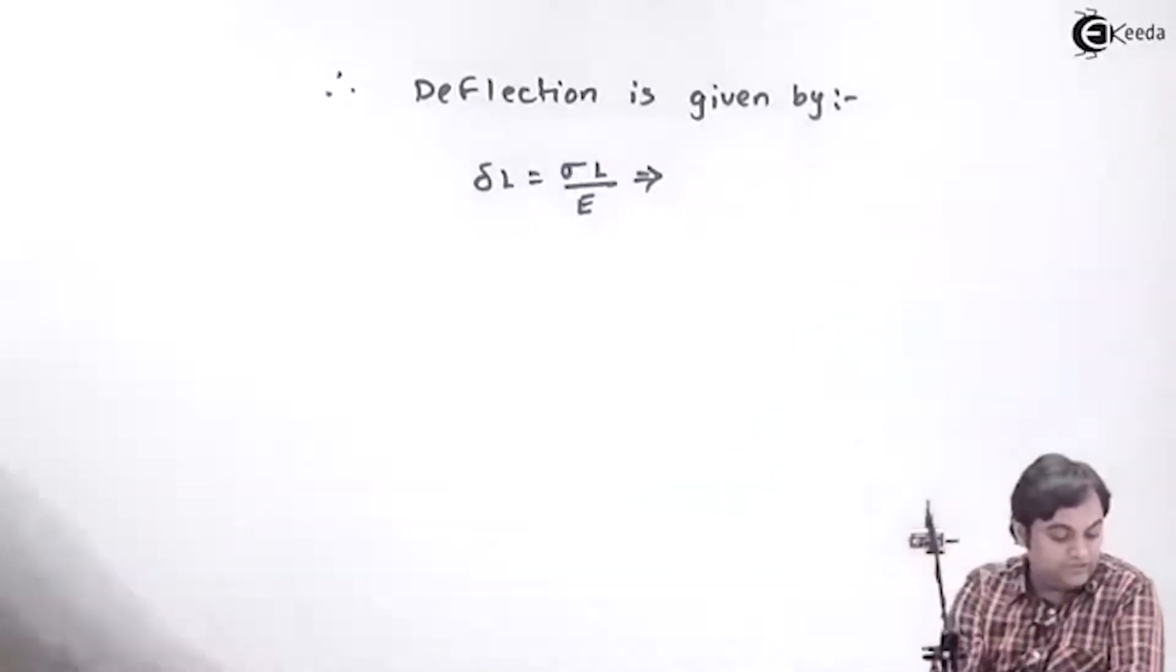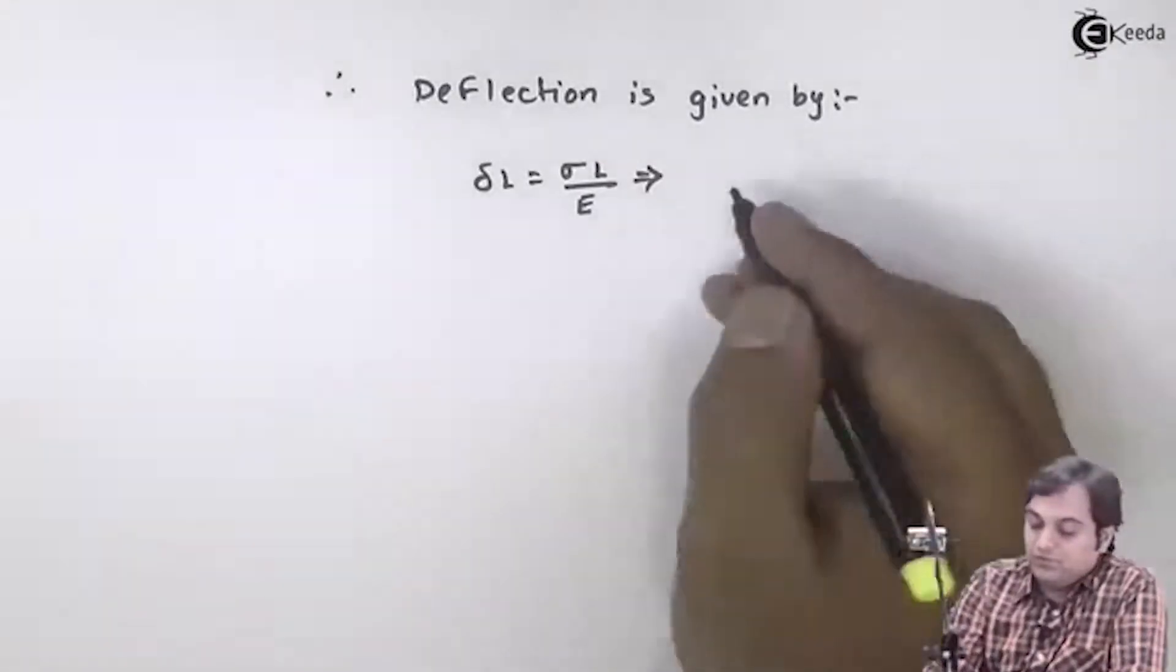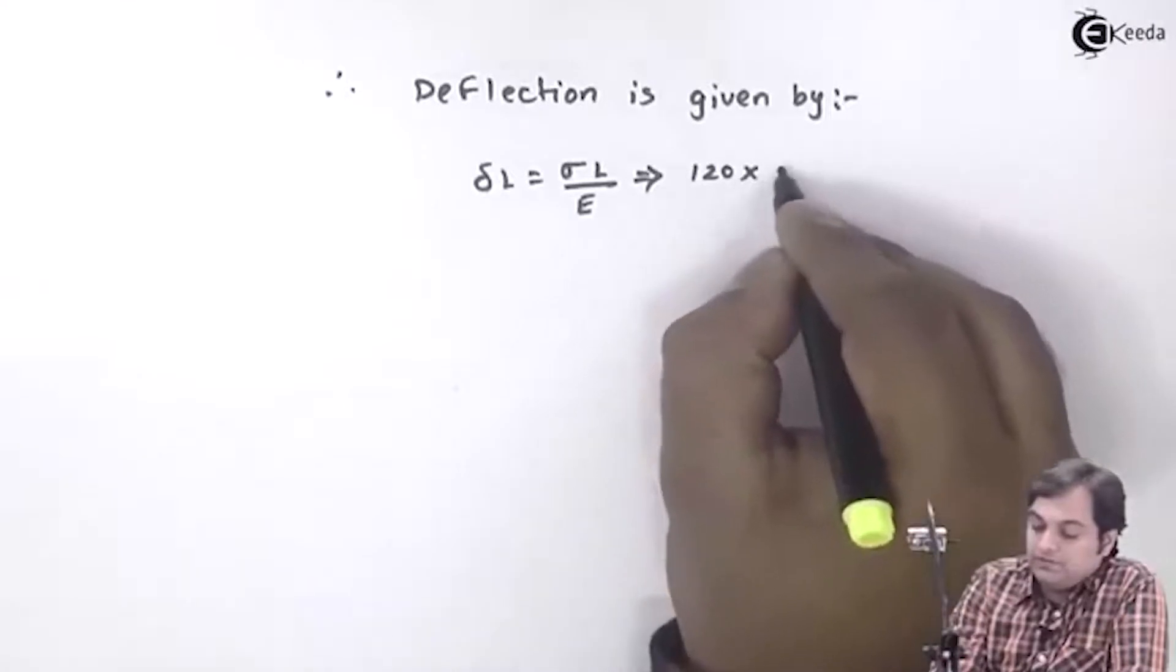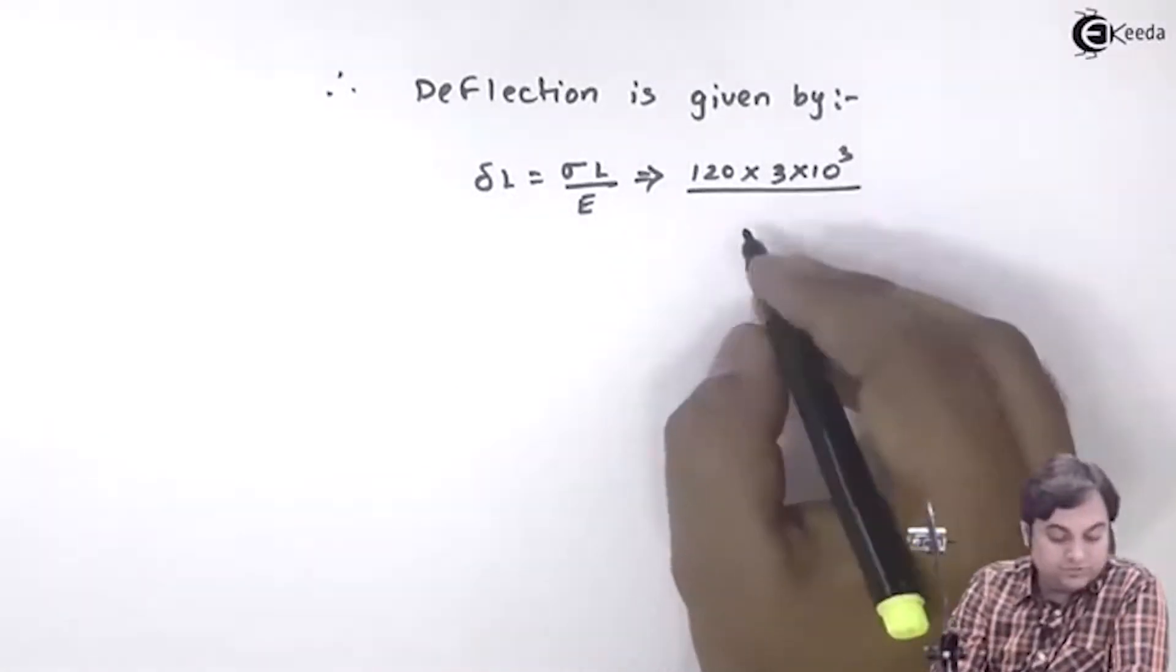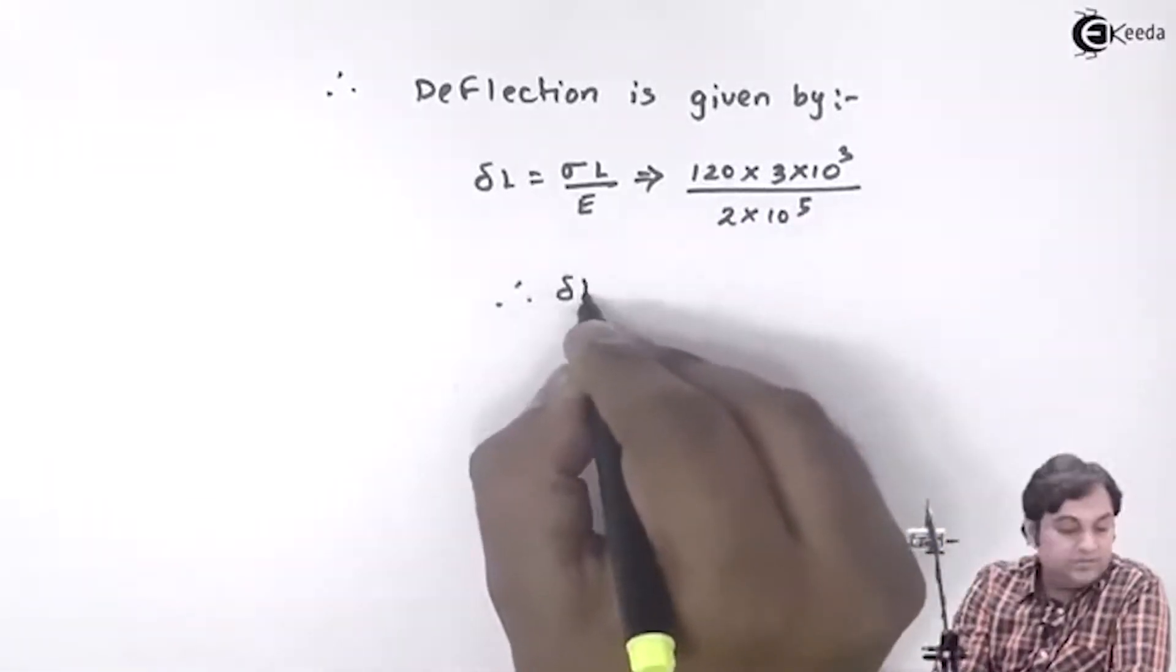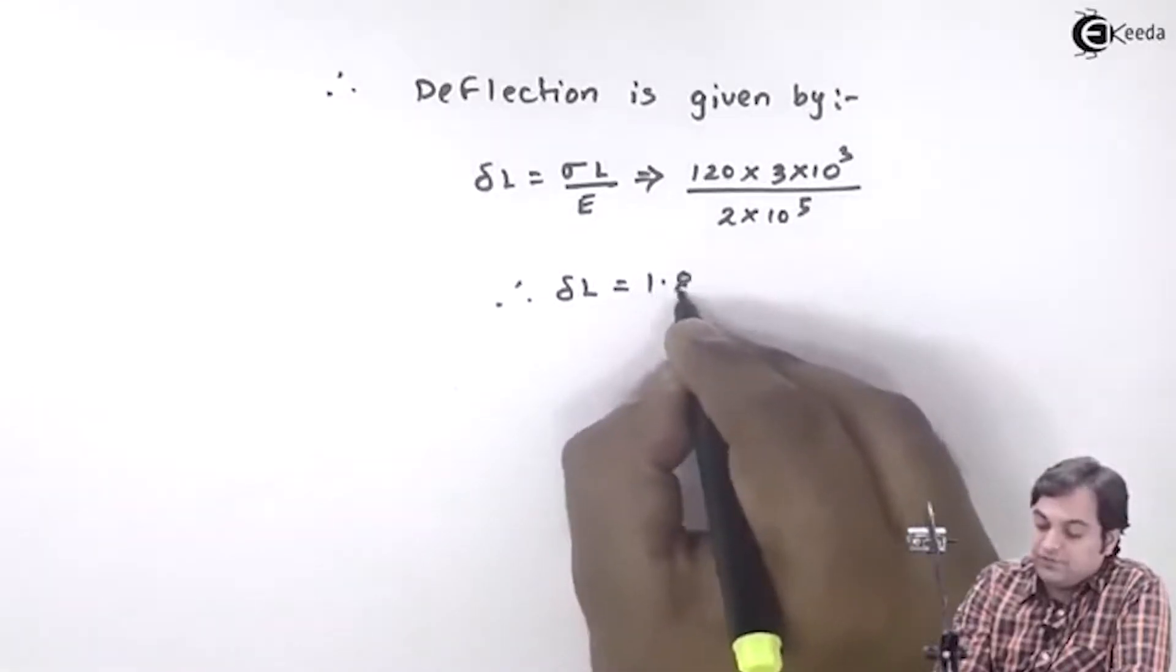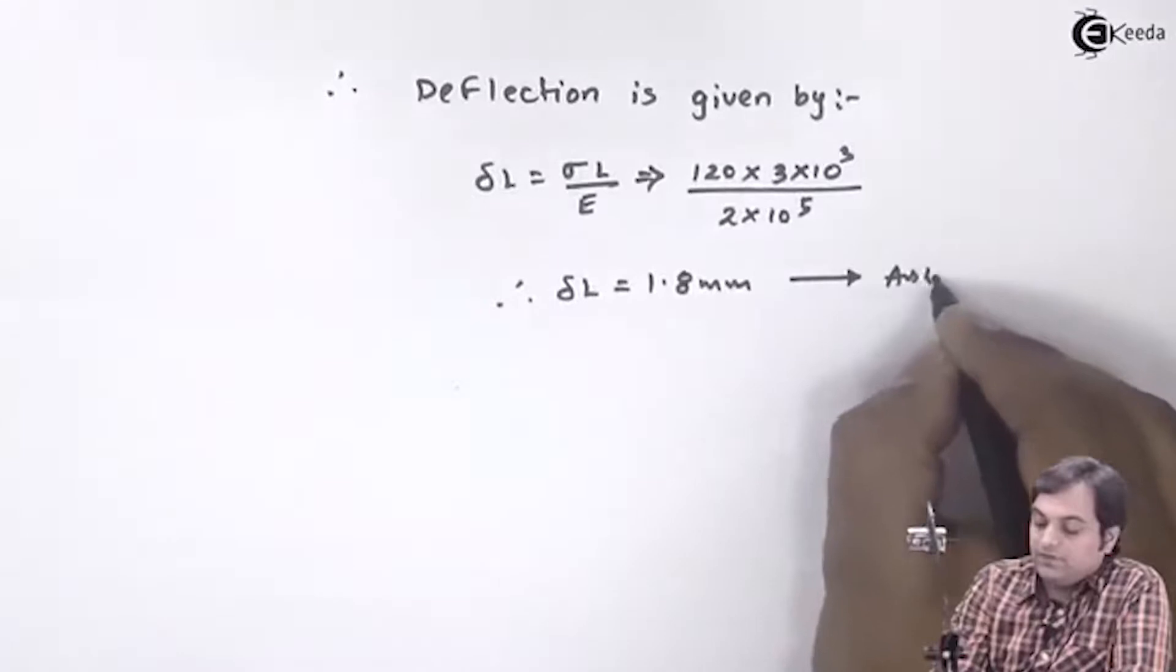The instantaneous stress is 120 N/mm², length is 3000 mm, and Young's modulus E = 2×10⁵ N/mm². Therefore, instantaneous deflection = 1.8 mm.